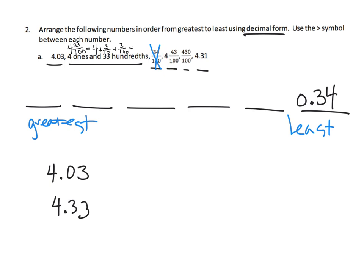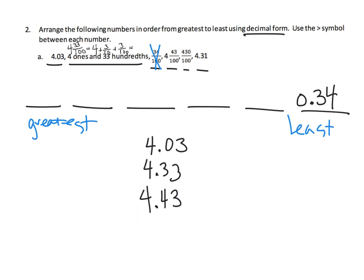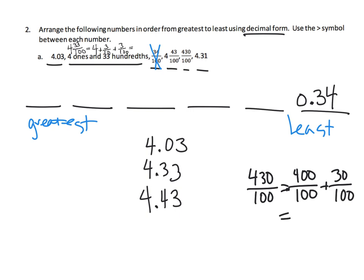The next one, four and 43 hundredths, is pretty straightforward — that's 4.43. Then four hundred thirty hundredths: we decompose that as 400 over 100 plus 30 over 100. Four hundred over 100 equals four, and 30 over 100 equals three tenths. So that's 4.3, and we can write that over here. All these decimals are showing up now.